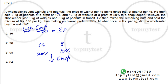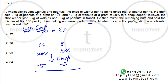The shopkeeper lost 5 kilos of walnuts and 3 kilos of peanuts. He then mixed the remaining nuts and sold them at 166 per kilo, making an overall profit of 25%. We need to find the price at which the wholesaler bought the walnuts — that is, the wholesaler's cost price.